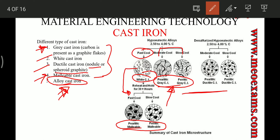Grey cast iron has flakes of graphite which help in crack propagation. To convert this microstructure into a more usable form, we desulphurize this alloy with the help of magnesium, which produces ductile cast iron. This is how the different types of cast iron are produced.